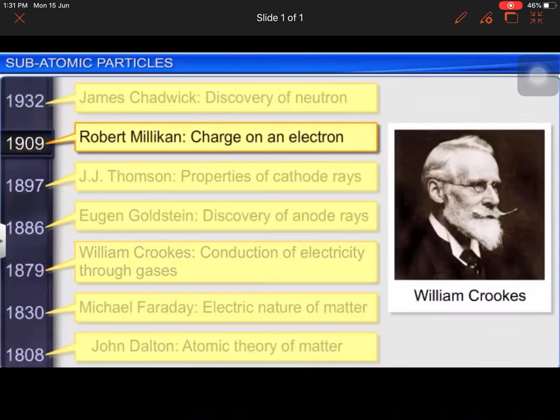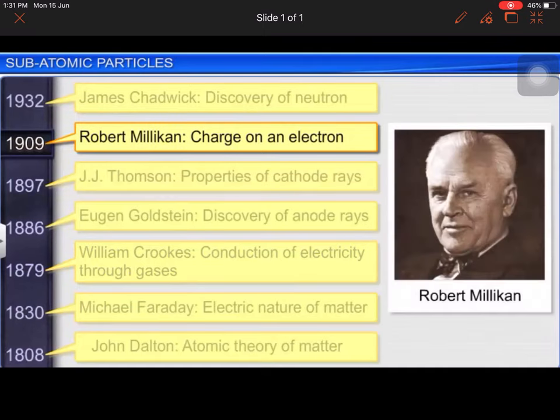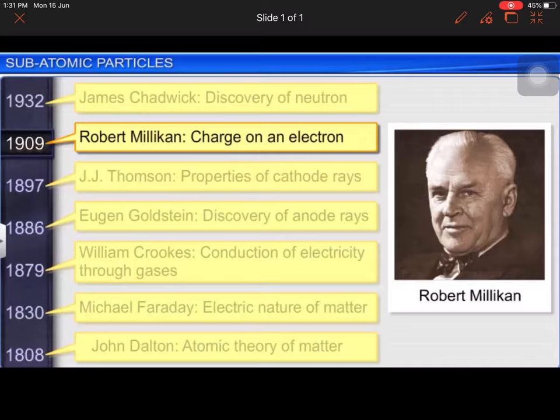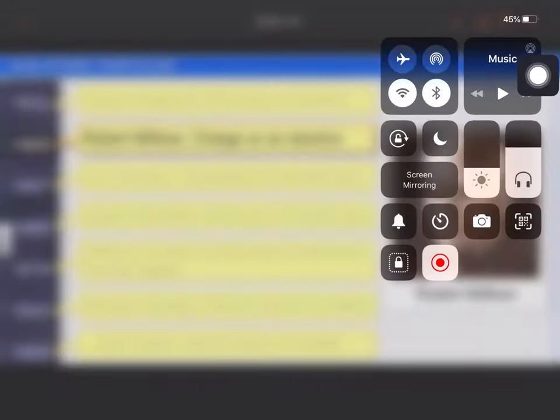The charge and mass of the electron however remained unknown until another scientist Robert Millikan devised a method to calculate them in 1909. Oil drop experiment - we will see this in the next video. Oil drop experiment, very interesting point.